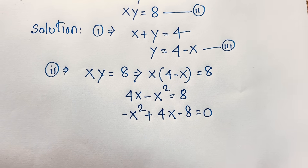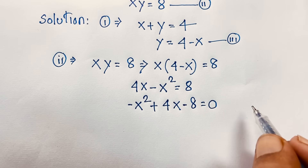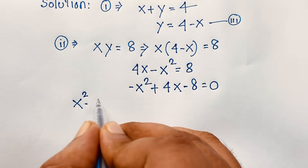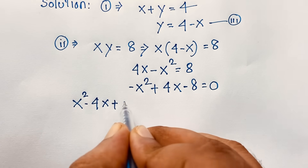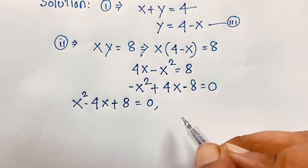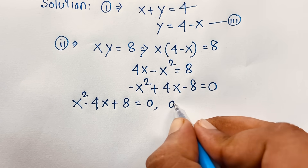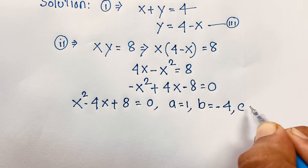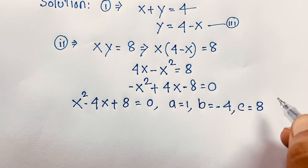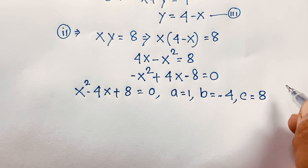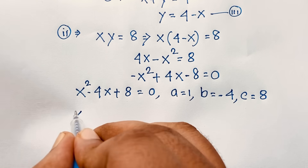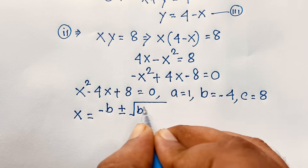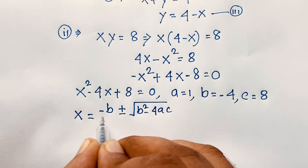We are finding a quadratic equation, but it has a negative sign. So I multiply both sides by negative 1. It will be positive x squared minus 4x plus 8 is equal to 0. In this quadratic equation, a is equal to 1, b is equal to minus 4, and c is equal to 8. Now, I apply the quadratic formula: x equals minus b plus or minus square root of b squared minus 4ac, all over 2a.